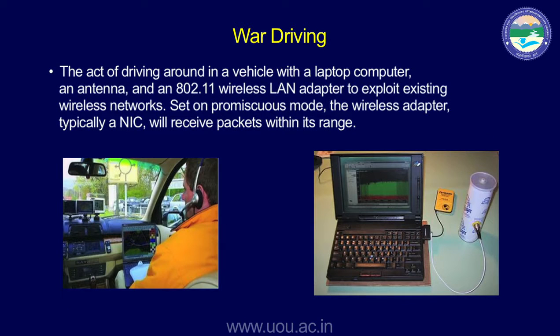War driving is driving at a very slow speed — say 10 km per hour — through a certain region while your device looks for Wi-Fi access points, identifying open access points and those using weak encryption, collecting all Wi-Fi access point data from that area. War walking is similar — carrying a laptop or device while walking and collecting access point details from a region or building premises.